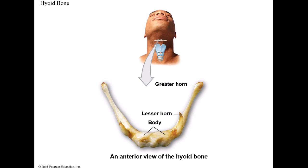The last bone is the hyoid bone - a U-shaped floating bone in the neck visible above the voice box. It doesn't articulate with any other bones and serves as an anchoring point for a number of muscles. The parts to know are: the body in the center, the two lesser horns as small projections, and the greater horns as the large projections - all serving as attachment points for muscles.